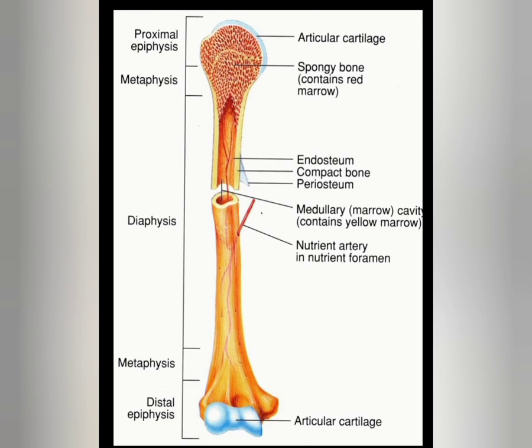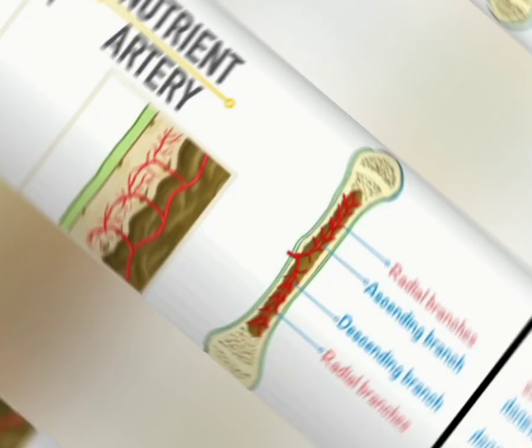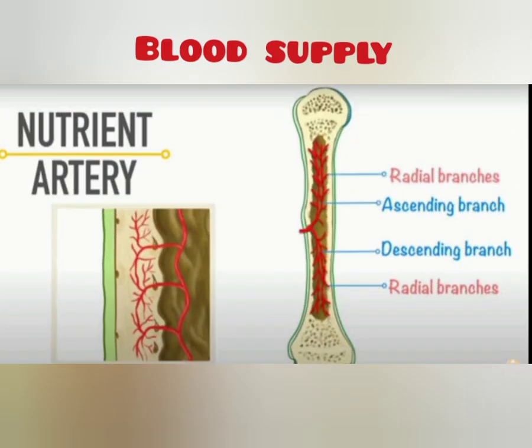Long bones are almost completely covered by a vascular membrane called the periosteum, which has two layers. The outer layer is tough and fibrous and protects the bone underneath. The inner layer contains osteoblasts and osteoclasts, the cells responsible for bone formation and breakdown. Hyaline cartilage replaces the periosteum on bone surfaces that form joints.